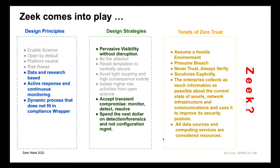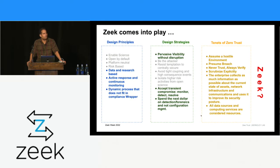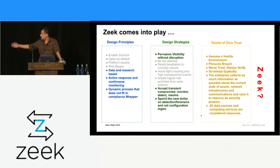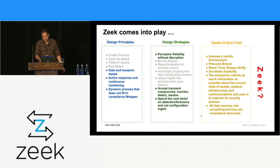Zeek generates unbiased data — it doesn't say these are bad domains, so I'll only log those. It logs everything, which helps you make more decisions. For design strategies, we talk about pervasive visibility, incidents as realities of life, Zeek allowing forensics and incident response. Everything in the Zero Trust tenants is actually pretty much relevant to continuous monitoring. This is how I think Zeek ties into it.